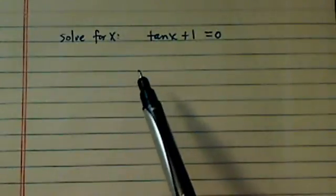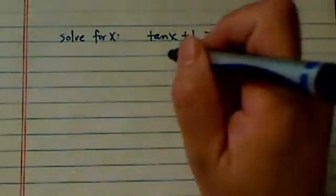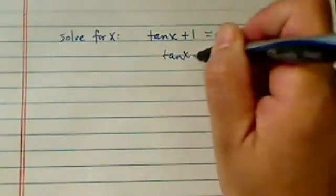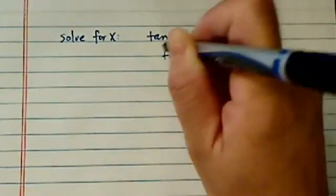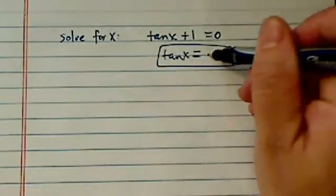Hey there. Thank you for watching this clip on solving a trig equation here. We have tangent of x here. Let's move the x equal to minus 1. So basically we're finding angles such that tangent of the angle is equal to minus 1.